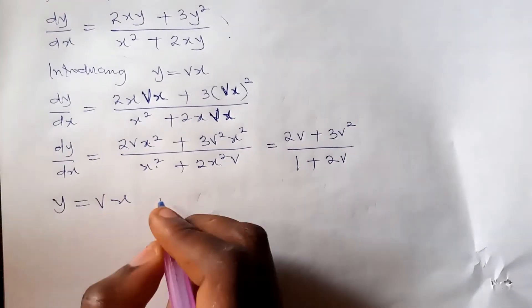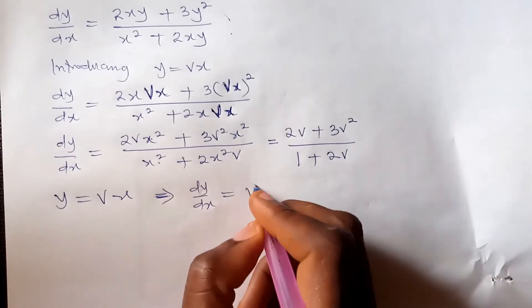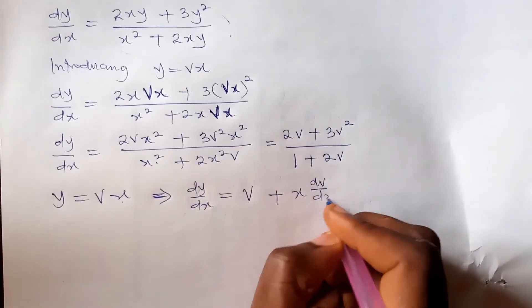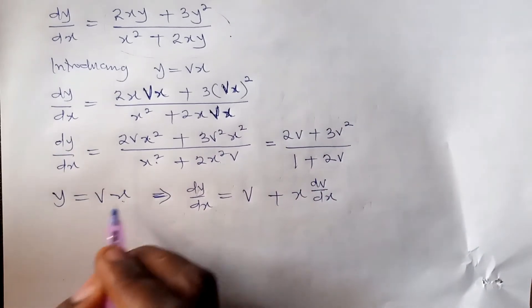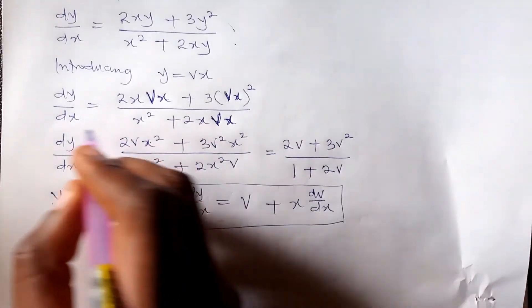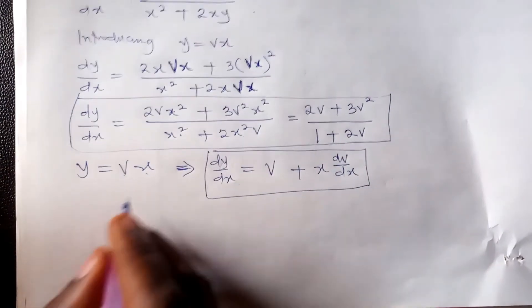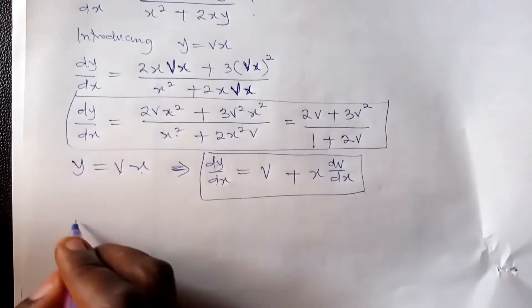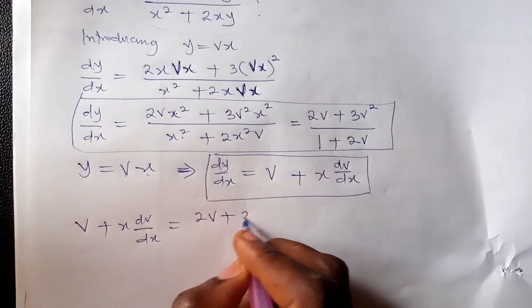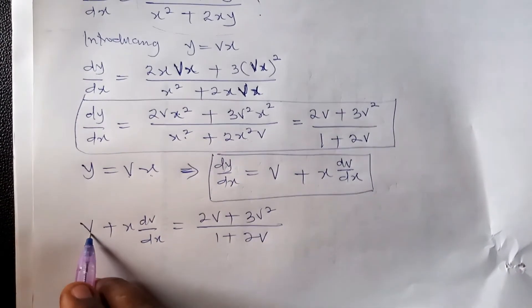Recalling that if y equals vx, then dy/dx equals v plus x dv/dx, using the product rule. Both expressions equal dy/dx, so we equate them: v plus x dv/dx equals (2v + 3v²)/(1 + 2v). The next step is to bring v to the other side so that x dv/dx equals (2v + 3v²)/(1 + 2v) minus v.